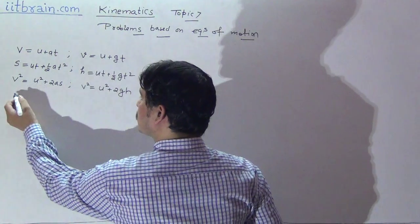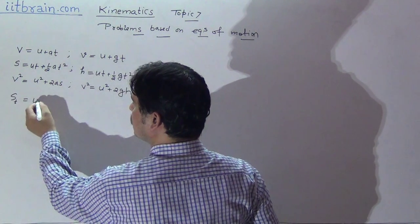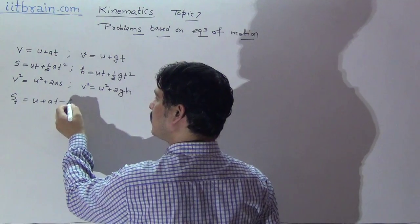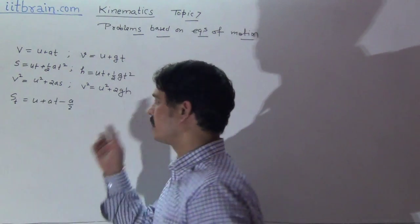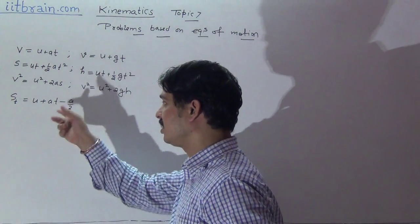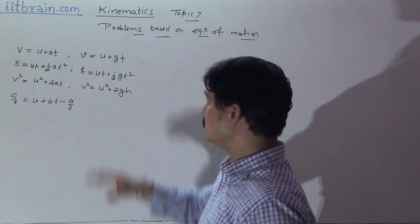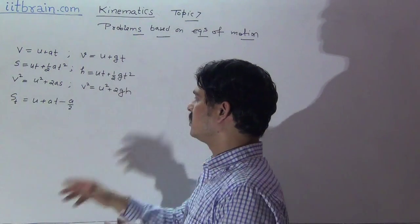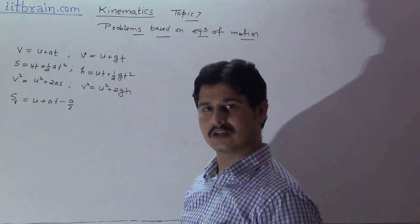The last equation is the distance covered in a particular second: s_t equals u plus at minus a by 2. This equation can also be used in gravitational cases, and the format will be u plus gt minus g by 2. These are the equations and their gravitational equivalents.